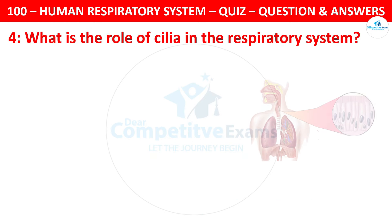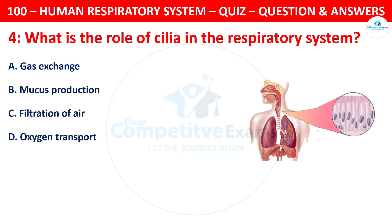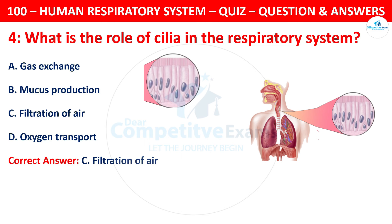Question 4. What is the role of cilia in the respiratory system? Your options are: gas exchange, mucus production, filtration of air, or oxygen transport. The correct answer is C, filtration of air.